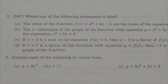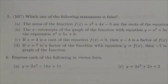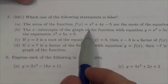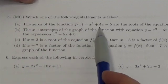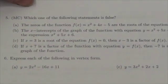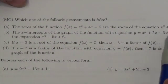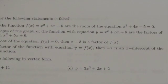All right everybody, we're working through the quadratic functions and relations review. Question number five is multiple choice and says which of the following statements is false. The first one says the zeros of the function x squared plus 4x minus 5 are the roots of the equation x squared plus 4x minus 5 equals 0.